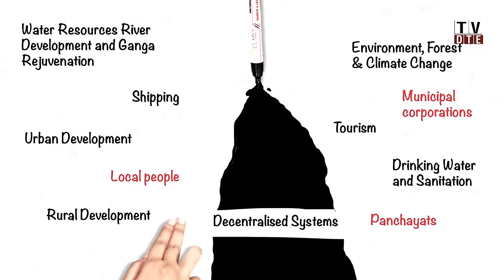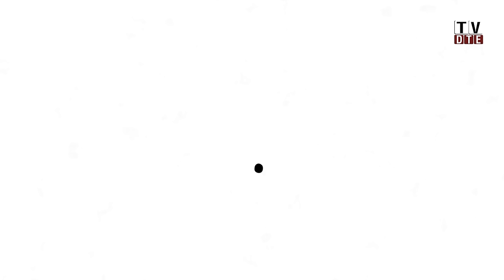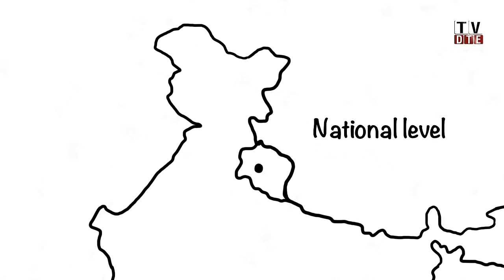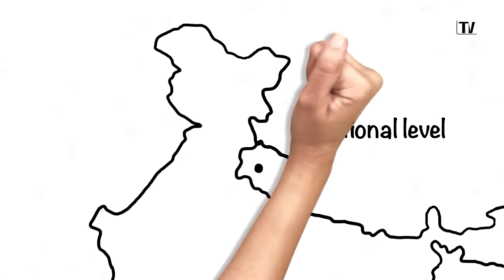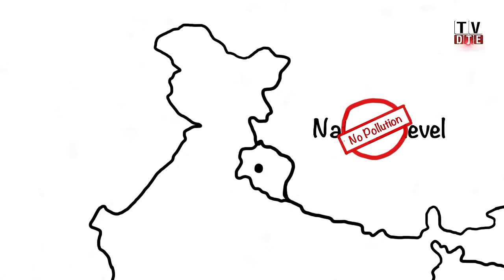Unlike the earlier programmes, decentralised systems are also being discussed to take care of waste in urban areas which are not connected to the sewer systems. Monitoring will be conducted at the district, state and national levels. Territorial army units and eco-task forces will be set up and a new law to prohibit pollution will be promulgated.